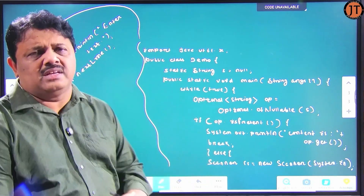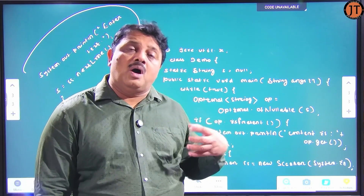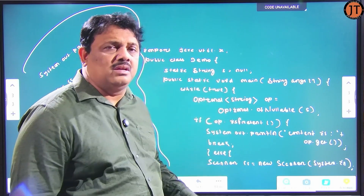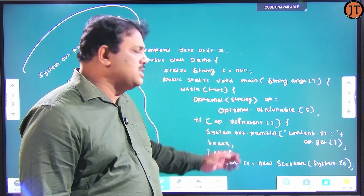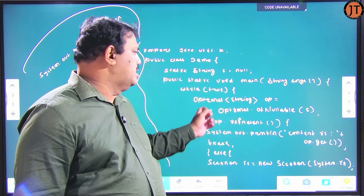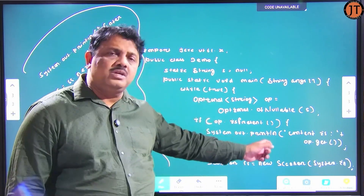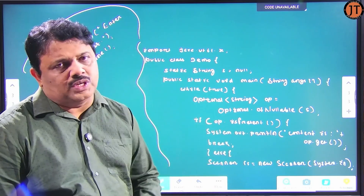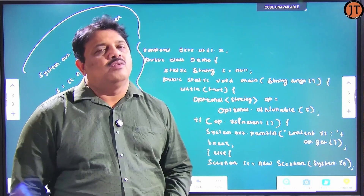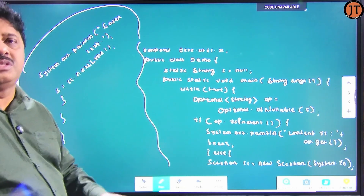On the second iteration, a new `Optional<String> op = Optional.ofNullable(s)` is created. Now `op.isPresent()` returns true because s is now initialized. We enter the if block: `String content = op.get()` — the `get` method extracts the string from the Optional object and prints the value. Then `break` terminates from the while loop. That's the simple code demonstrating that `ofNullable` is a static factory method that creates an Optional instance and checks if it contains some value.